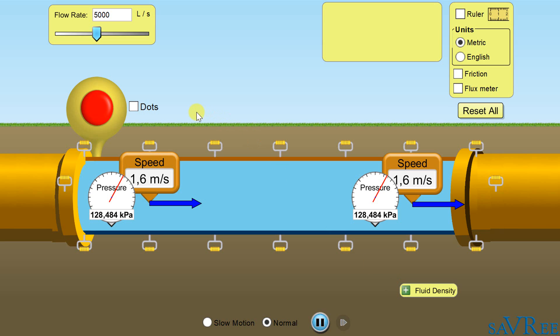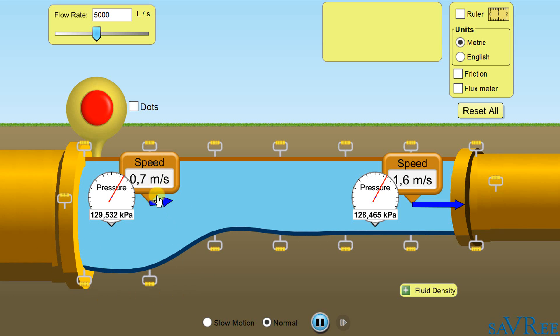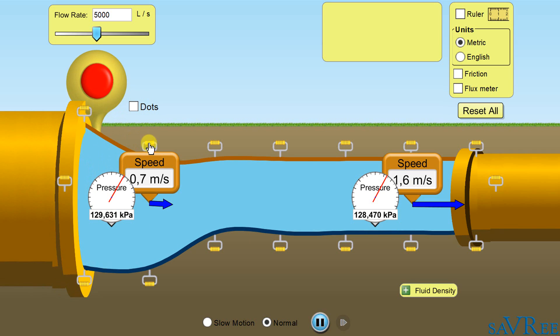So I'll extend the pipe, and I'll make the pipe a little bit bigger in diameter. And we can see already, the speed has dropped. It's now 0.7 meters per second instead of 1.6. And the pressure has increased. Can do it also here. Again, the speed has dropped, 0.4 meters per second. And the pressure has increased again. So we know that if we increase the flow path area, we get a reduction in speed and an increase in pressure. And that's what Bernoulli's principle states.